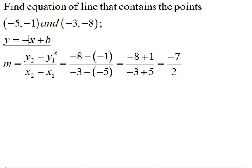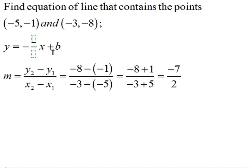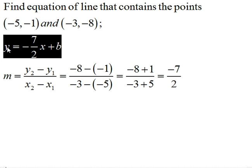So I'm going to write here, I'm going to replace the m with the value I just found out, -7/2. So as you can see here, this equation is getting the shape, it's getting in form. However, I'm missing the b.